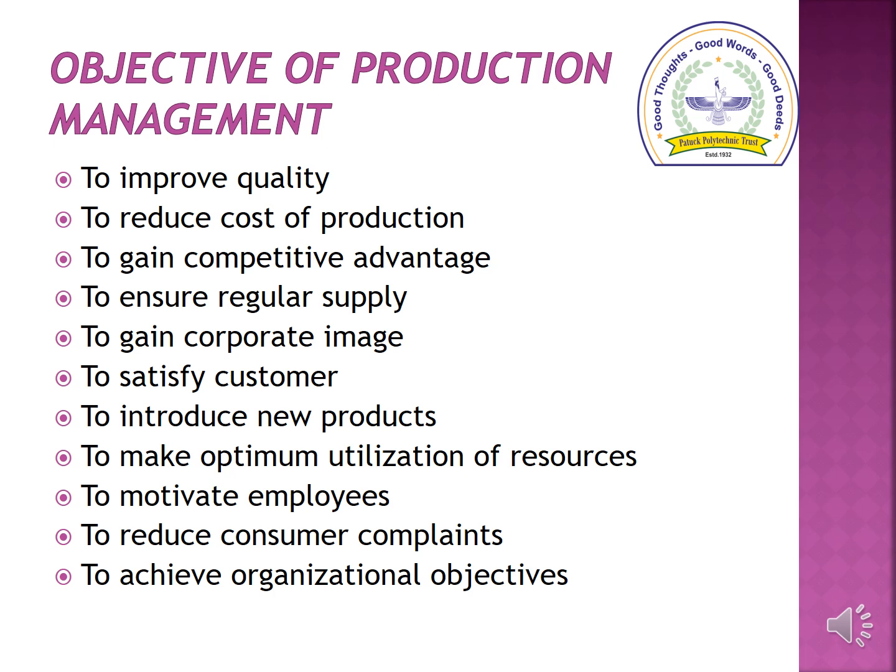The main objectives of production management are as follows. The first is to improve quality — production management aims at quality production, and the production department undertakes research and development where quality is a hallmark to customer satisfaction. The next objective is to reduce cost of production; cost reduction can take place through cost-cutting measures wherever possible.